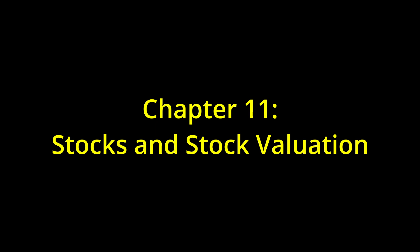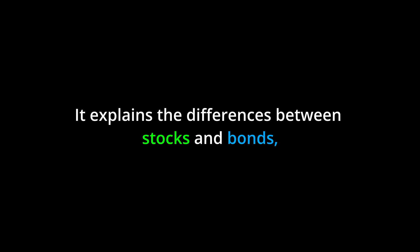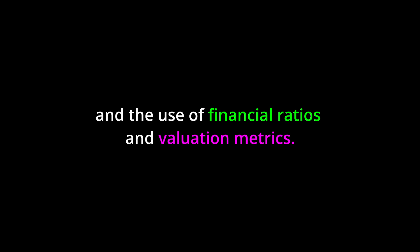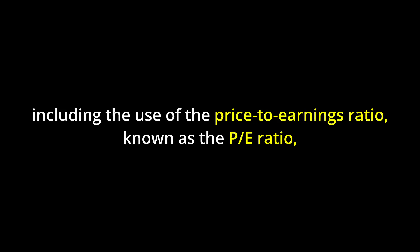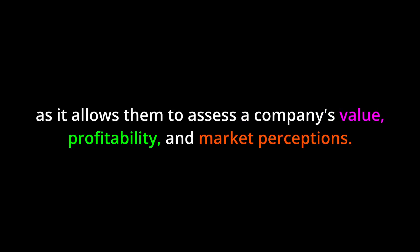Chapter 11: Stocks and Stock Valuation. This chapter provides an overview of stocks and stock valuation. It explains the differences between stocks and bonds, the advantages and disadvantages of investing in stocks, and the use of financial ratios and valuation metrics, including the price-to-earnings ratio (P/E ratio) and the price-to-book ratio (P/B ratio). Understanding stock valuation is crucial for investors and financial analysts as it allows them to assess a company's value, profitability, and market perceptions.